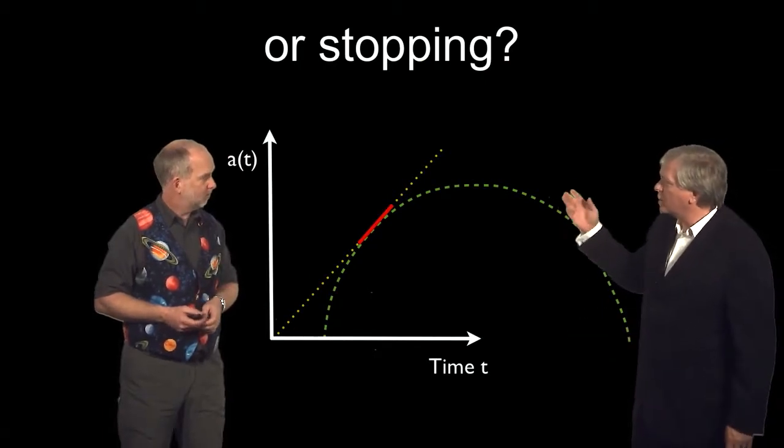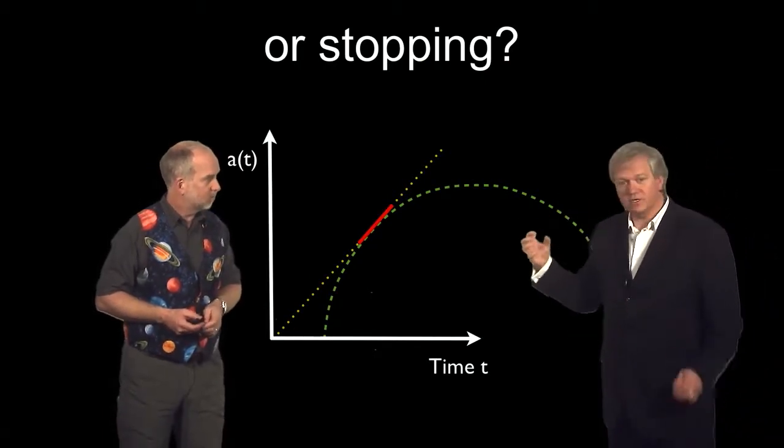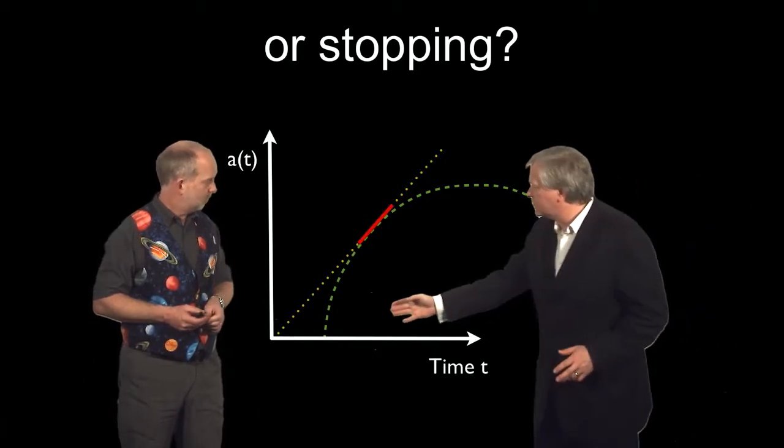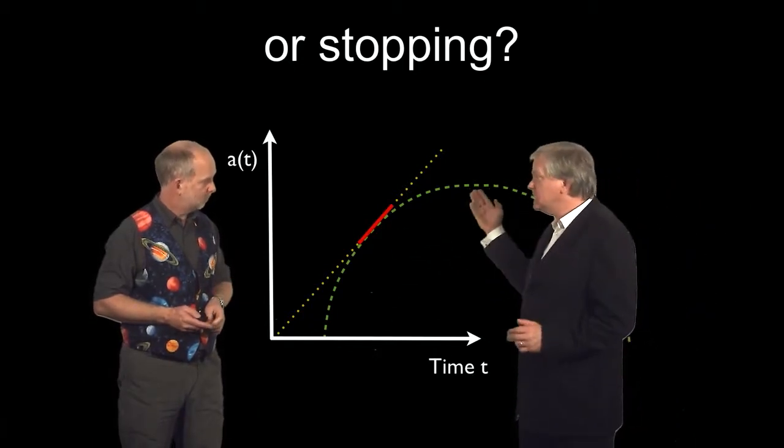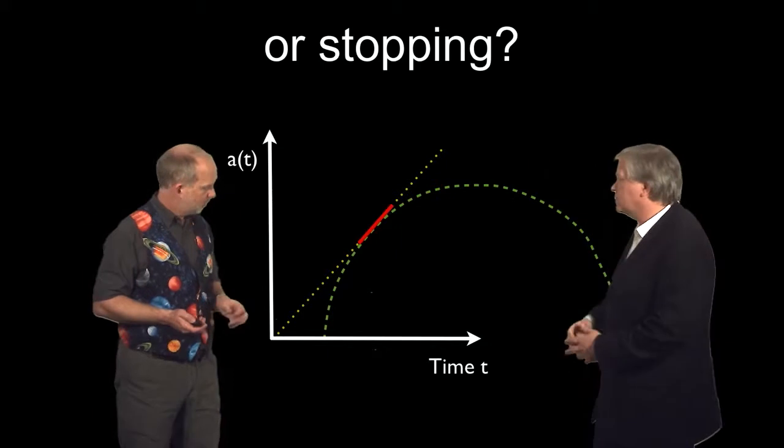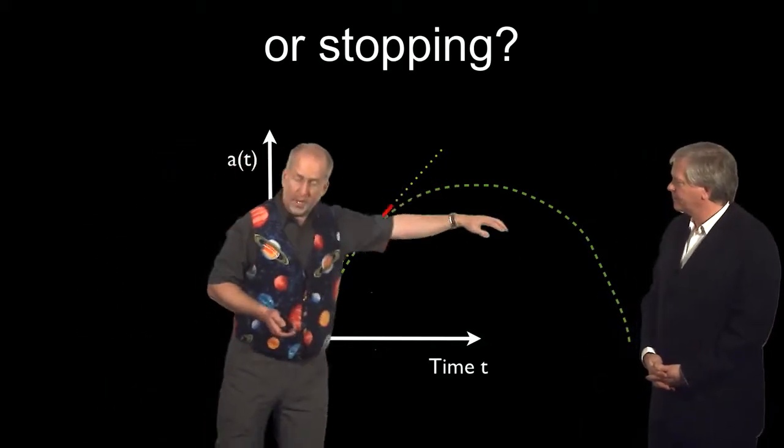What about one where there's lots of gravity? Gravity that's so strong that the universe actually does completely stop and start going in reverse. So the scale factor goes up and comes back down again.